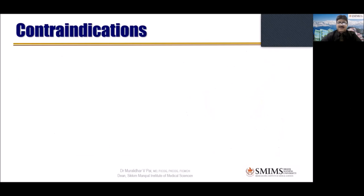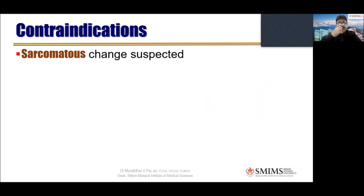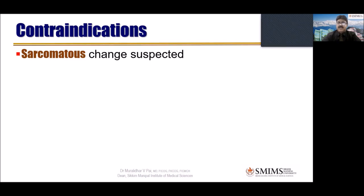Are there any contraindications for myomectomy? Yes, there is one contraindication in modern gynecology: suspected sarcomatous change — it is better to do hysterectomy. With sarcoma, you cannot nicely remove the fibroid because the plane of cleavage is lost, and as treatment you cannot just do myomectomy. You have to do hysterectomy, and probably after that give radiotherapy as well as chemotherapy.